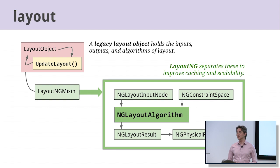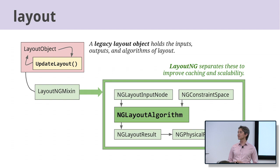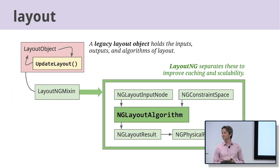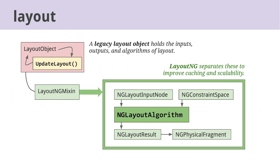The layout engine is in the middle of a rewrite called NG, for Next Generation Layout. Right now the tree has a mixture of legacy layout objects and NG layout objects. The biggest change in NG is a cleaner separation of inputs and outputs — we used to put all of it on the layout objects, and the layout object had state that got modified during layout, which was hard to scale. With NG we have immutable objects for the inputs, the algorithms, and the results of the algorithms. This lets us be a lot smarter about caching and makes it easier to build new layout algorithms.